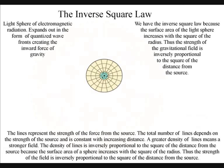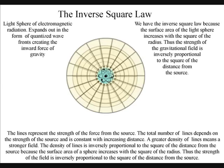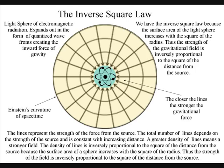We have the inverse square law because the surface area of the light sphere increases with the square of the radius. Thus the strength of the gravitational field is inversely proportional to the square of the distance from the source.